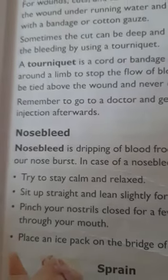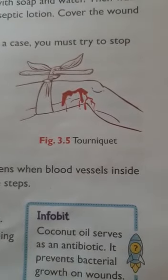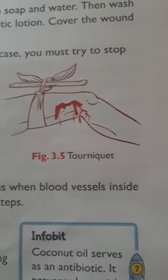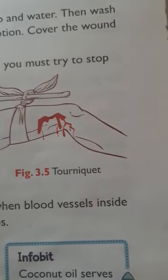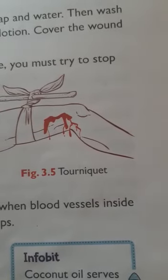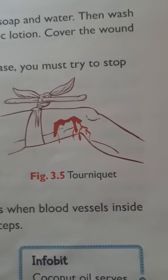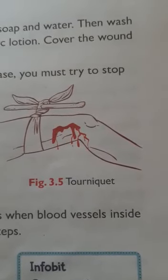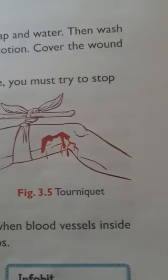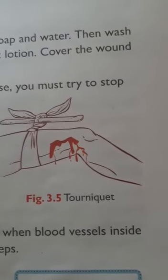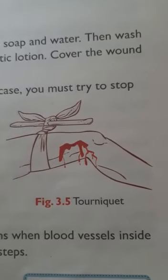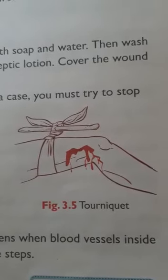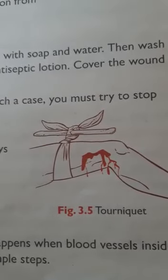Sometimes the cut can be deep and bleeds more. In this case, you must try to stop the bleeding by using a tourniquet. A tourniquet is a cord or bandage tied tightly around the limb to stop the flow of blood. It should always be tied above the wound and never on the wound. Remember to go to a doctor and get an anti-tetanus injection after getting an injury.